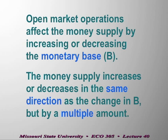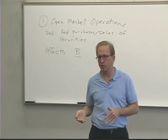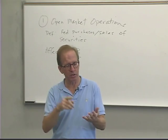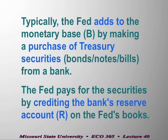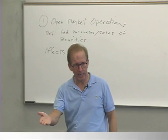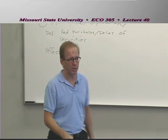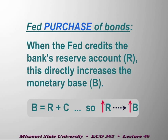Suppose the Federal Reserve comes to some banker and says, I'd like to buy a million dollars worth of treasury bonds from you — treasury bills, treasury notes, treasury bonds, sometimes also agency bonds like Fannie Mae, Freddie Mac. The banker hands the bonds to the Federal Reserve, and the Fed says, would you like vault cash or should I add something to your reserve account? The banker says, reserve account. So bank reserves are going to be credited — that's when the Fed purchases government securities from the private sector.